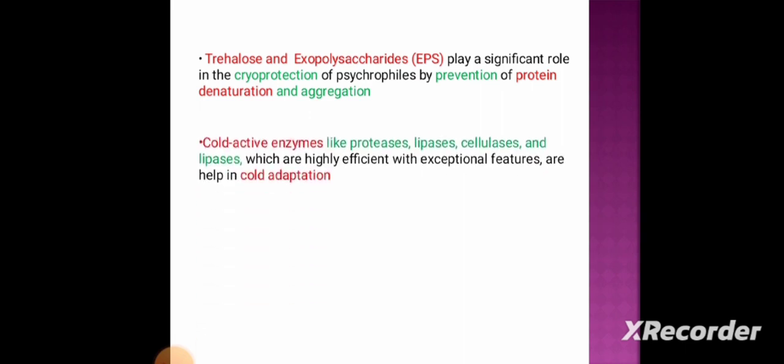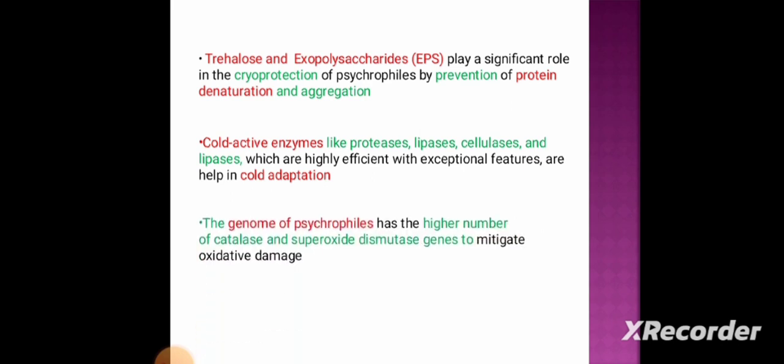Cold active enzymes like proteases, lipases, and cellulases, which are highly efficient with exceptional features, help in cold adaptation of psychrophiles. The genome of psychrophiles has a higher number of catalase and superoxide dismutase genes, which help to mitigate the oxidative damage in the cold environment.